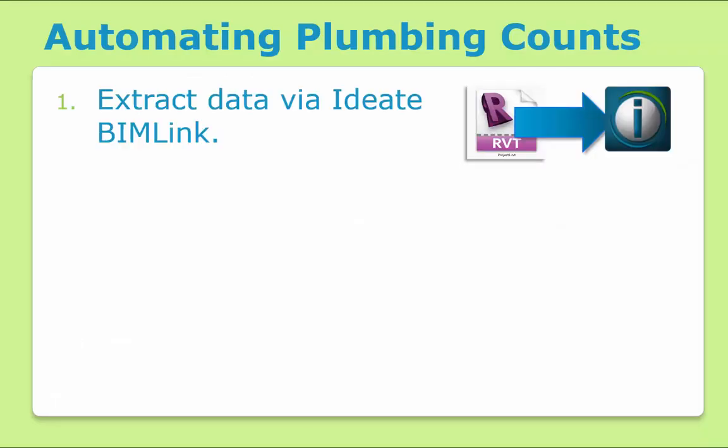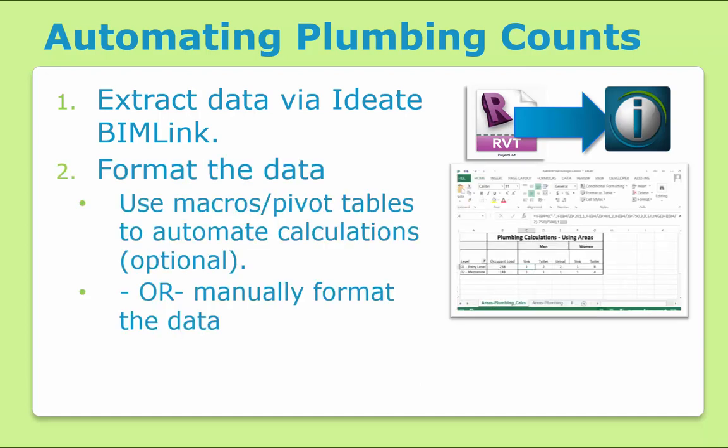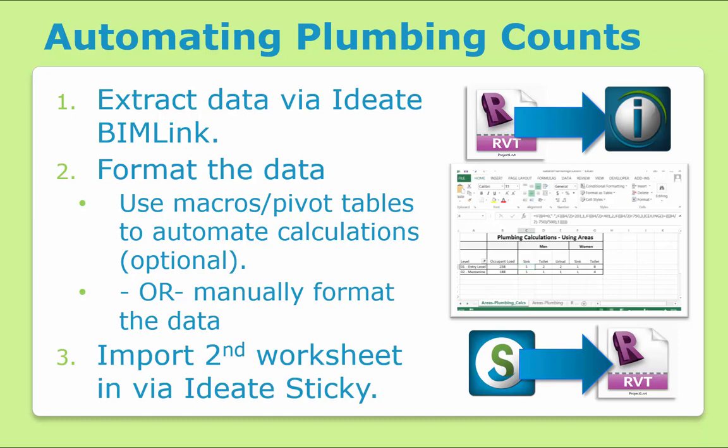To summarize this process: the first step was to export the data from Bimlink. The second step is to format the data — this can be done manually or through the use of a pivot table and a macro, as we've shown here, and this step can be automated. Lastly, you want to create or update your Sticky using Ideate Sticky. Be sure to use the Auto Update function to ensure that the Excel file values are published back into Revit all the time.